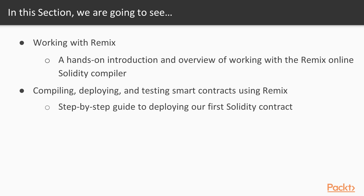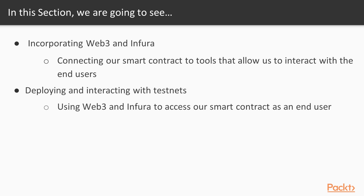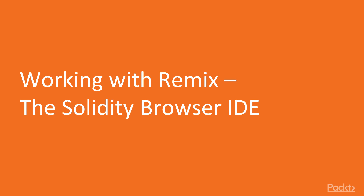Since the last time we were deploying contracts, we were mainly focused on getting our Remix and MetaMask configurations set up correctly. Next, we'll be taking a look at incorporating two important tools, Web3 and Infura, that will allow us to bootstrap an actual Ethereum application. Once we have an Application Instance or Dapp, end users will be able to communicate with our smart contracts through a web page or web app. Finally, in our last video of the section titled Deploying and Interacting with Testnets, we'll be leveraging Infura and Web3 to interact with the contract we deploy to the Kovan Testnet.